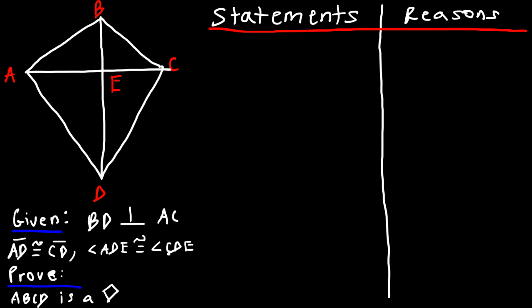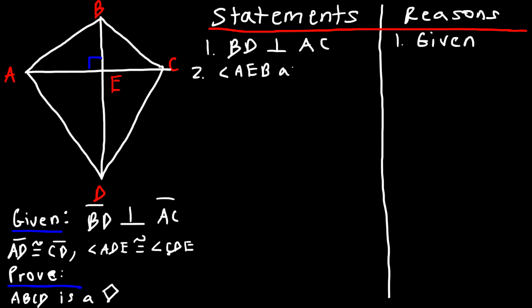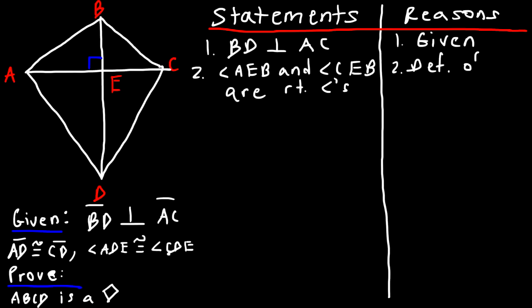The first thing we do is start with the first given statement: BD is perpendicular to AC — that's given. Because those two segments are perpendicular, we can conclude that angles AEB and CEB are right angles. The reason is the definition of perpendicular lines.